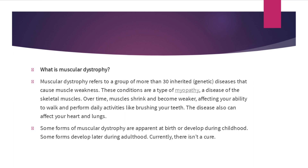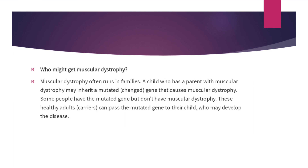Currently there is no cure. Muscular dystrophy often runs in families. A child who has a parent with muscular dystrophy may inherit a mutated gene that causes the disease. Some people carry the mutated gene but do not have muscular dystrophy. These healthy adults can pass the mutated gene to their child, who may develop the disease.